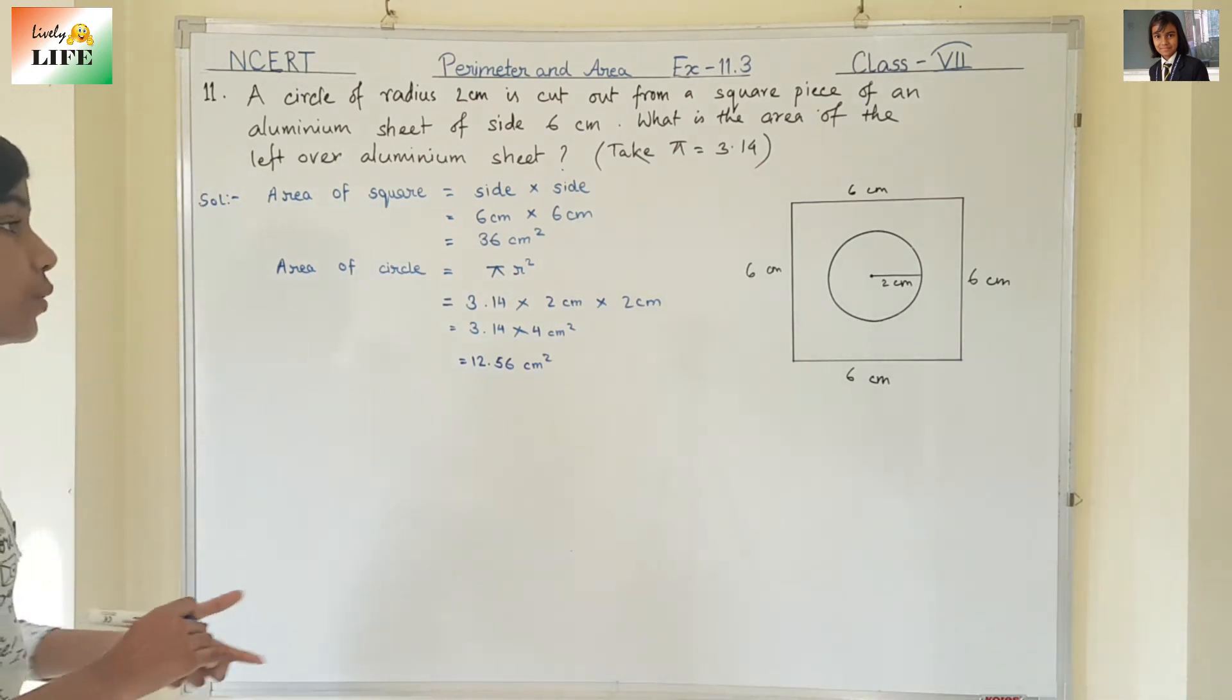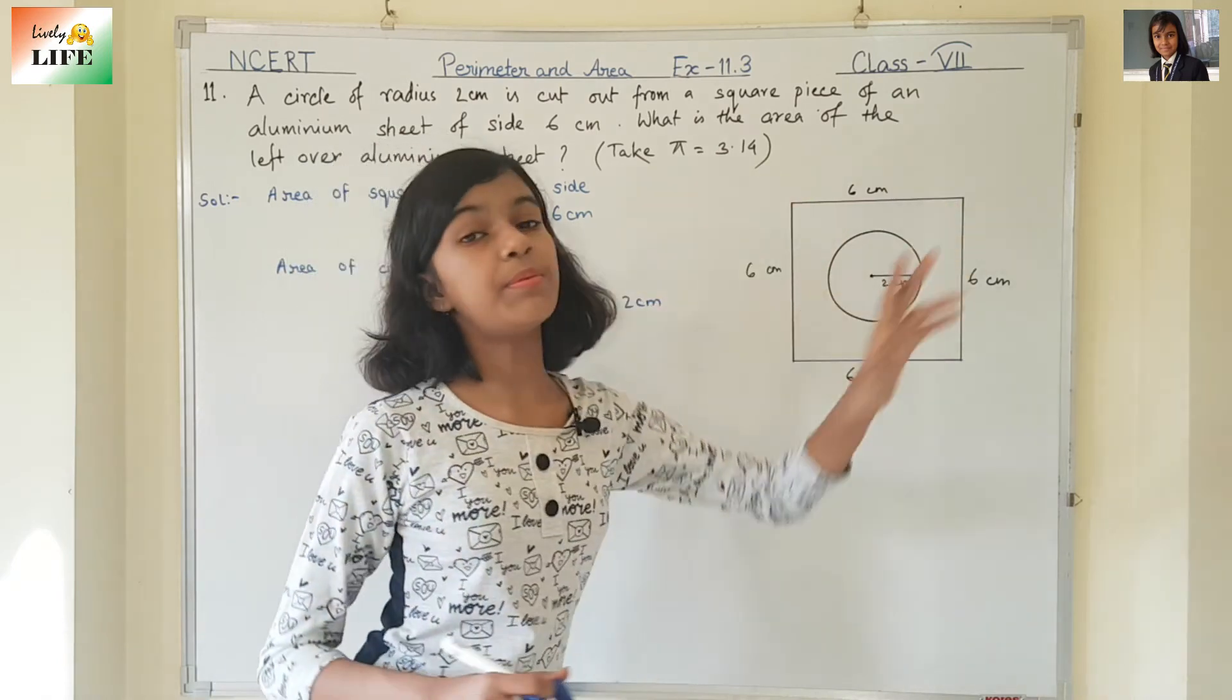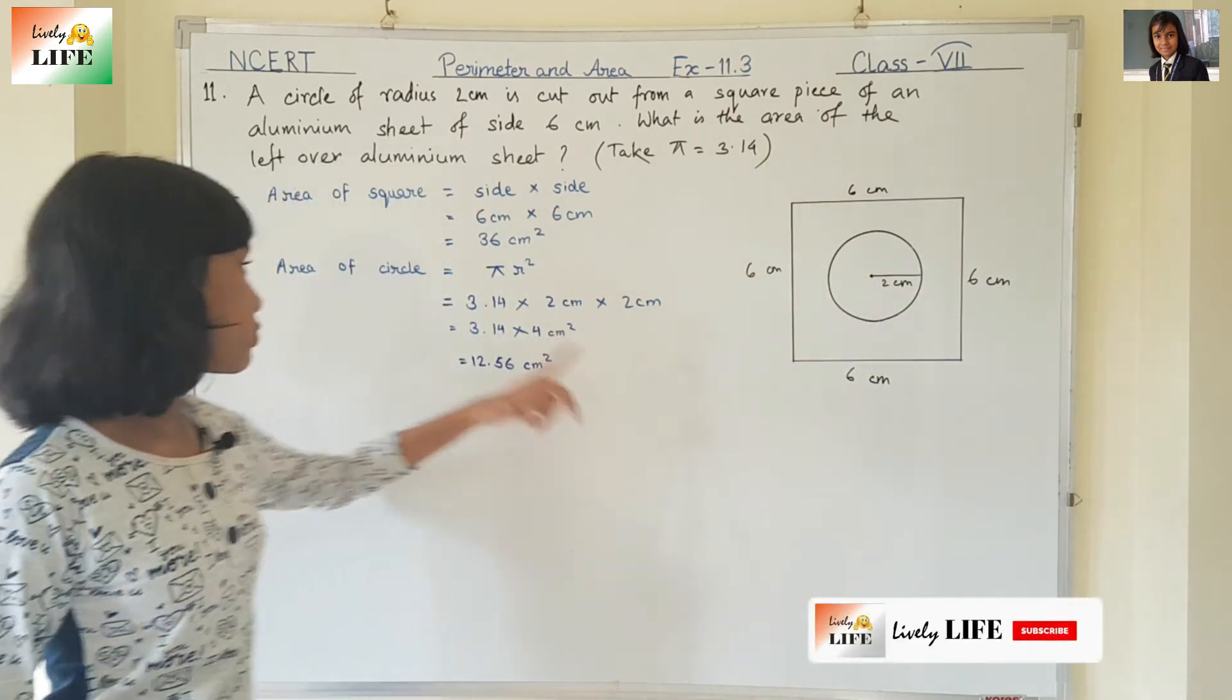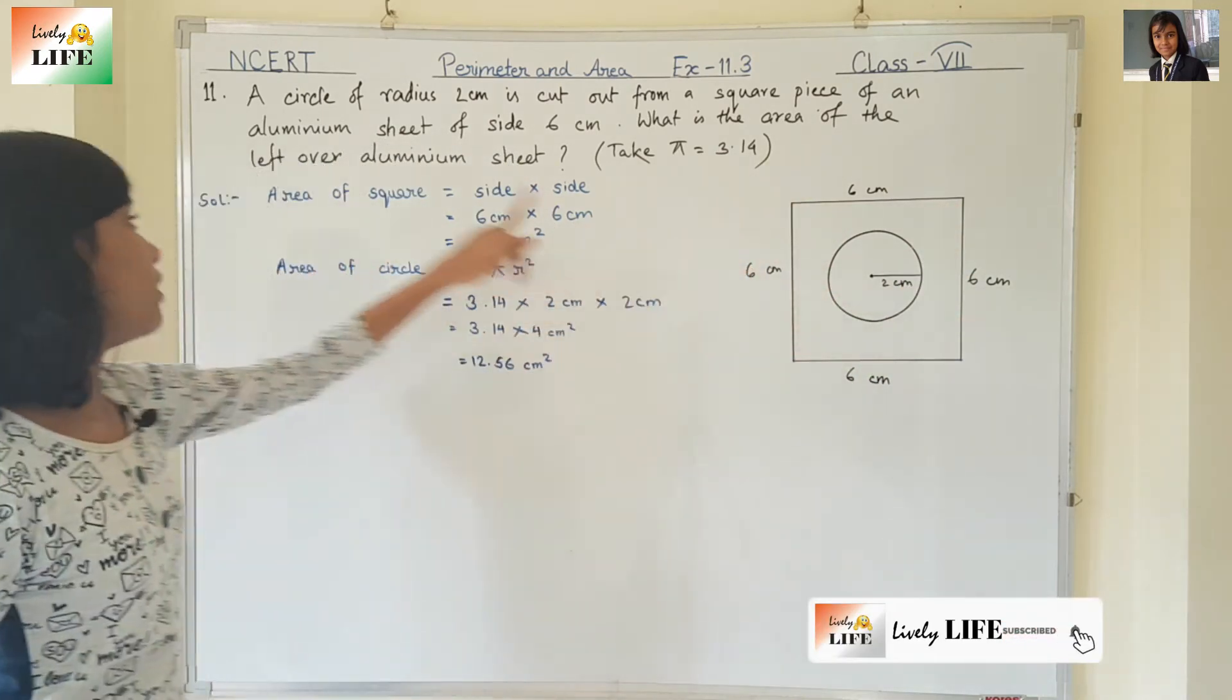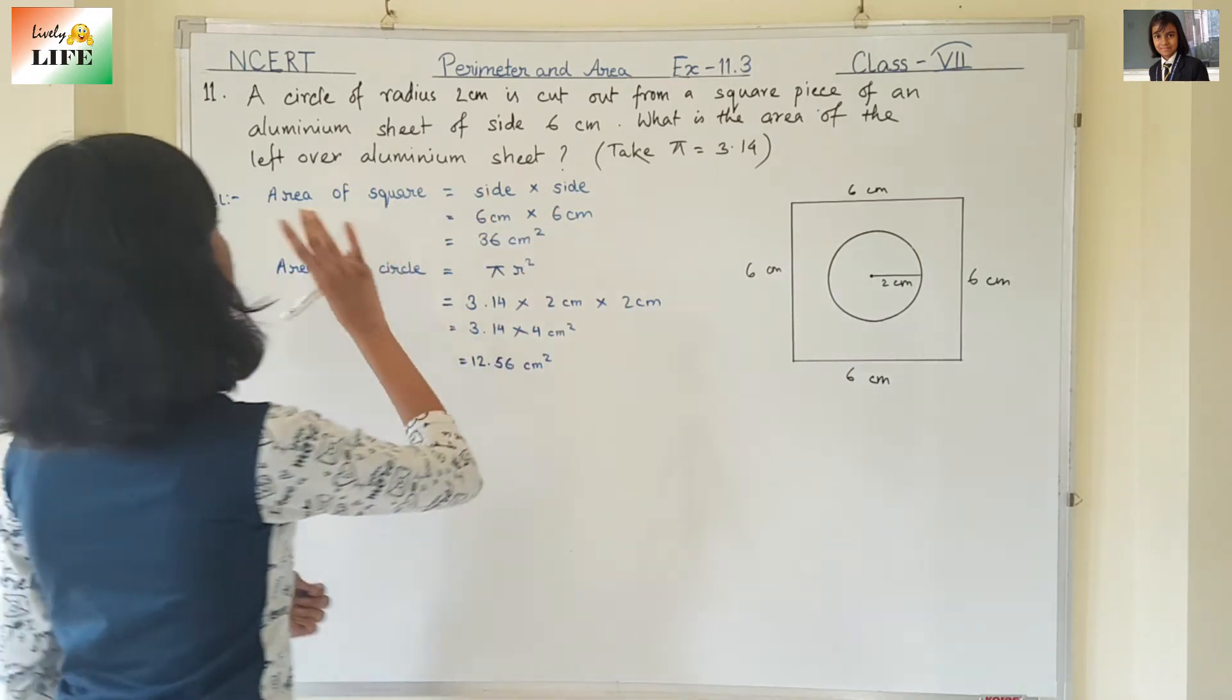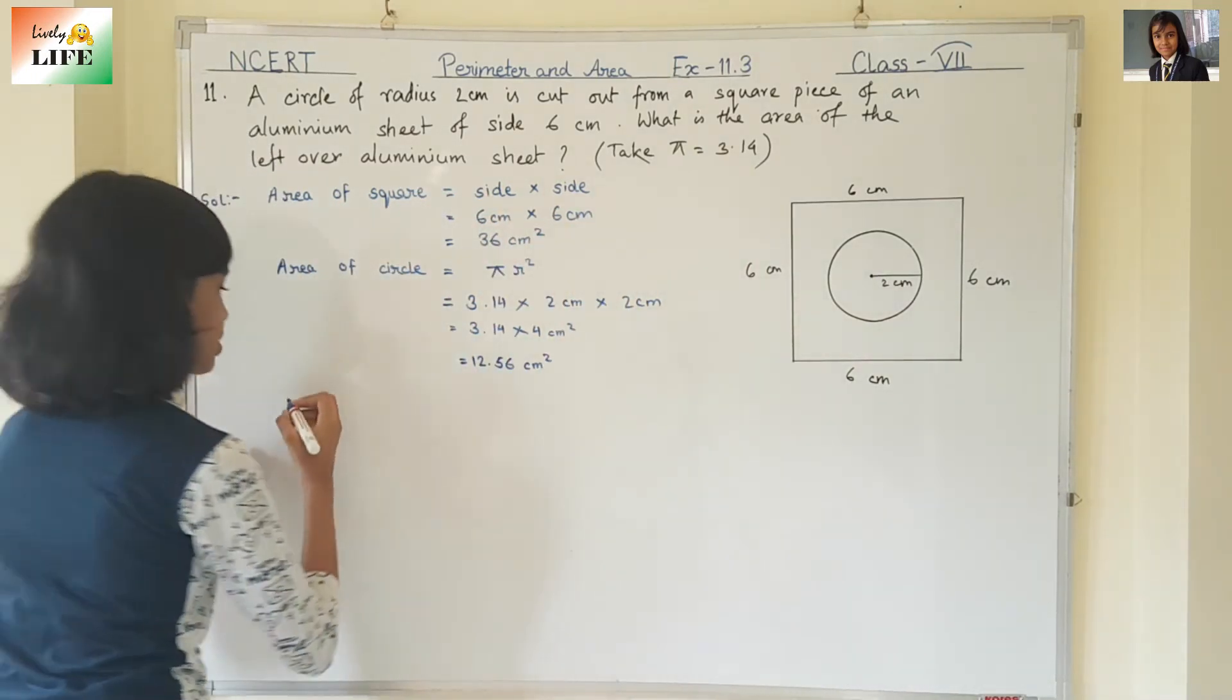Now, if we need to find the area of the remaining part, what do we need to do? We need to subtract the area of the circle from the area of the square, right? So, area of left over sheet.